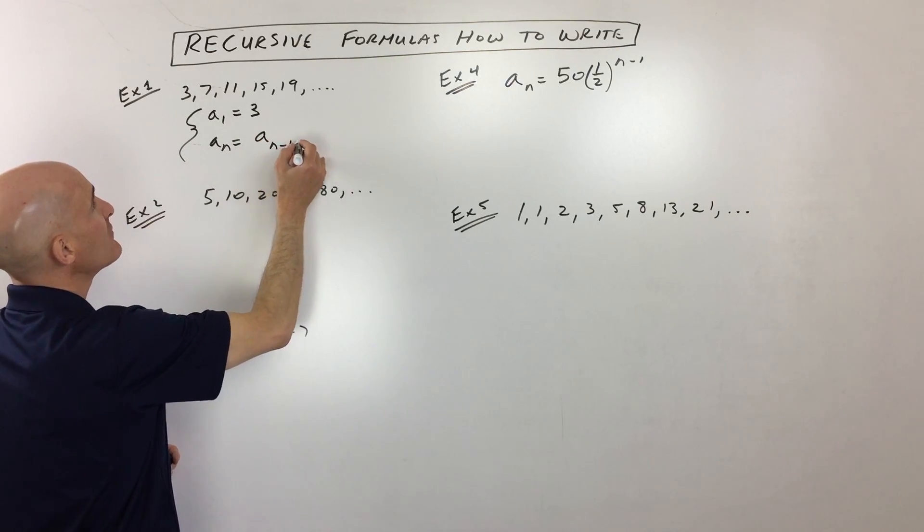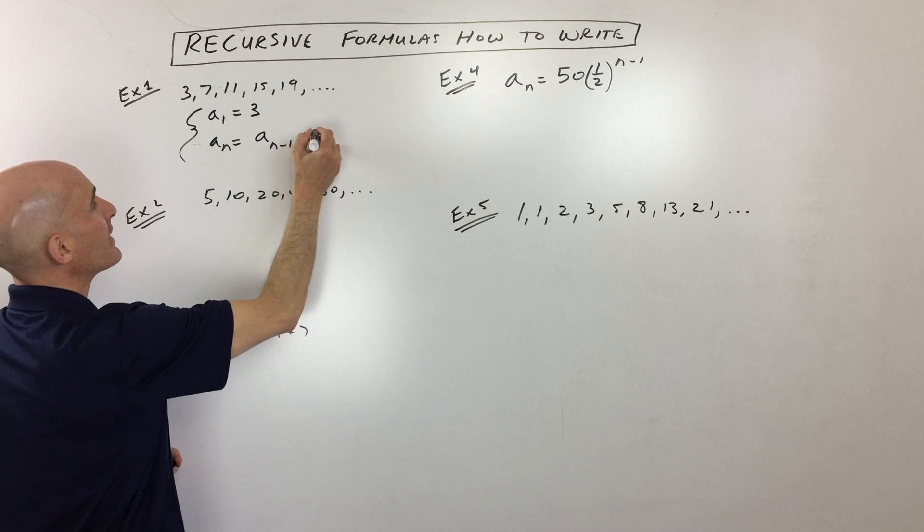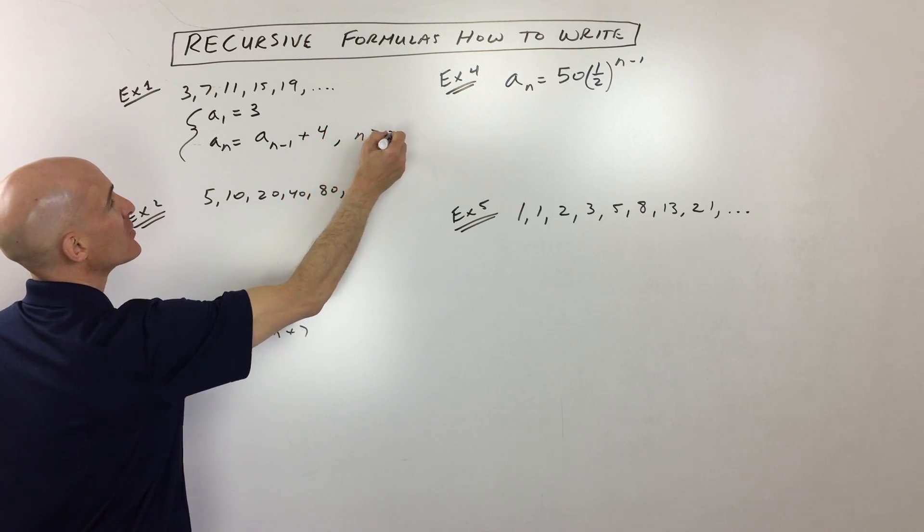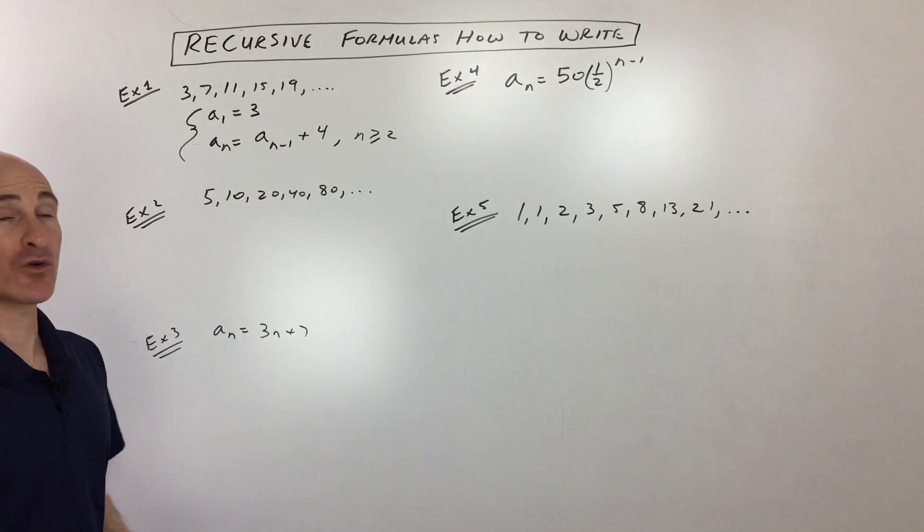And what we're doing is we're taking that previous term and we're adding four. And this is for when n is greater than or equal to the second term, third term, fourth term.